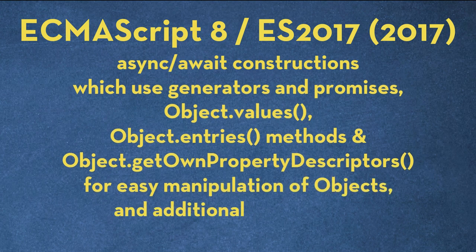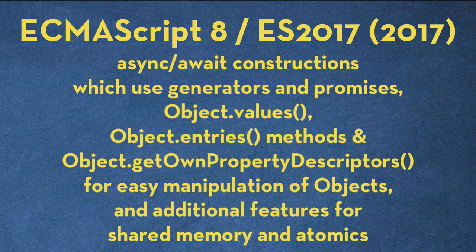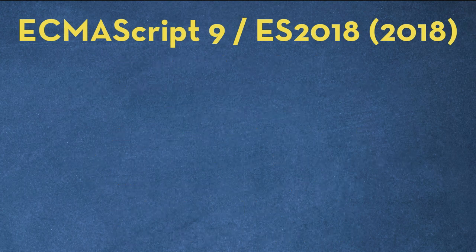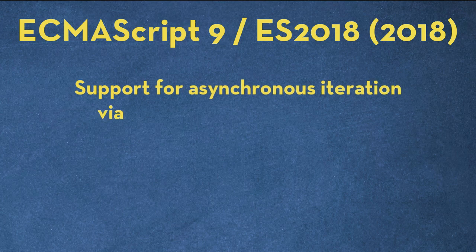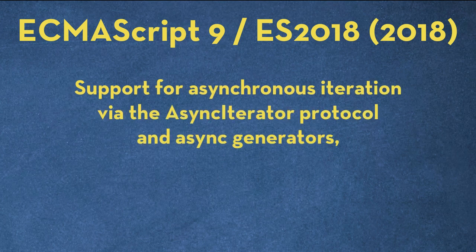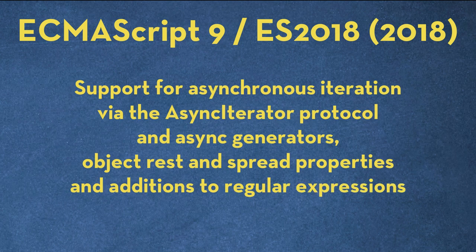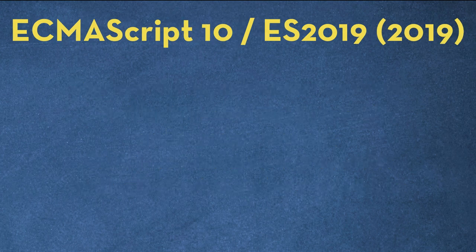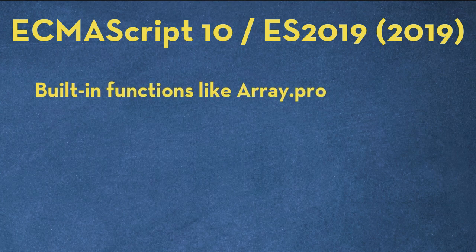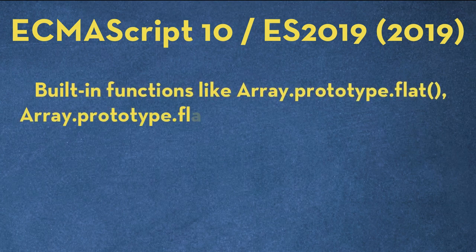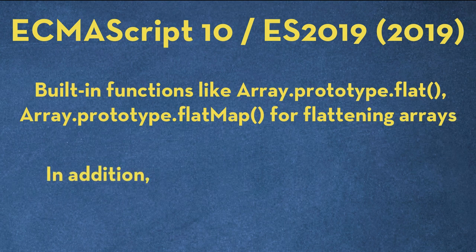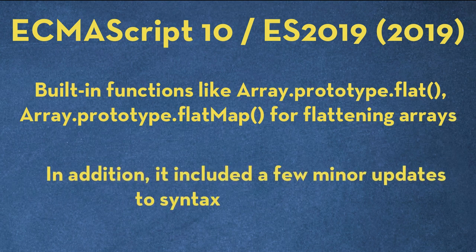ES9 was finalized in 2018 with cool new features such as support for asynchronous iteration via the async iterator protocol and async generators, object rest and spread properties, and additions to regular expressions. ES10 was published in 2019 and got updates such as built-in functions like Array.prototype.flat and flatMap for flattening arrays, in addition to a few minor updates to syntax and semantics.